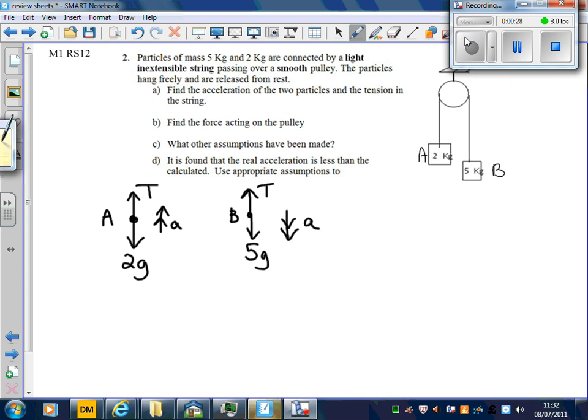If we use Newton's second law, then the resultant force in the direction of motion for A is T minus 2g, and that must equal mass times acceleration. And for B, the resultant force is 5g minus T must equal 5a.